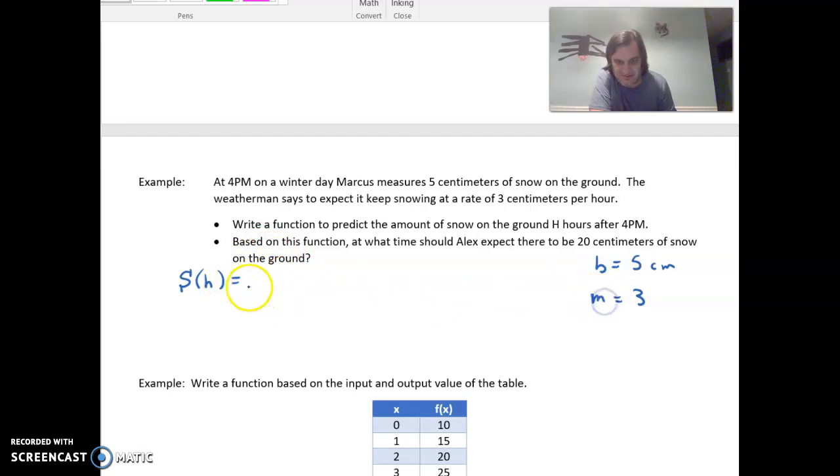So what do we have? We have a rate of 3 times the number of hours, for 3 centimeters every hour, plus the original 5. So s of h equals 3h plus 5. That's the amount of snow h hours from 4 o'clock.